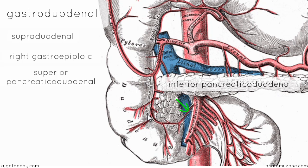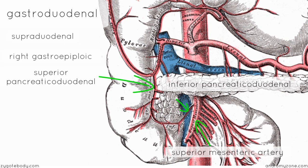There is an inferior pancreaticoduodenal artery which comes off the superior mesenteric artery. So, like all the anastomosing vessels we've seen — the left gastric anastomosing with the right gastric on the lesser curvature, and the left gastroepiploic with the right gastroepiploic on the greater curvature — we now see an anastomosis between the superior pancreaticoduodenal artery and the inferior pancreaticoduodenal artery. To further complicate things, the superior pancreaticoduodenal artery and its inferior counterpart both have anterior and posterior branches.